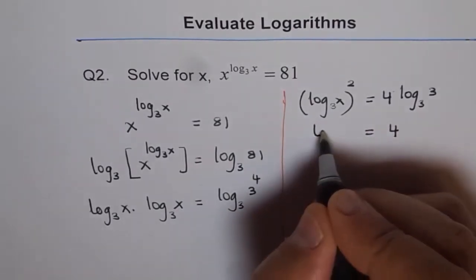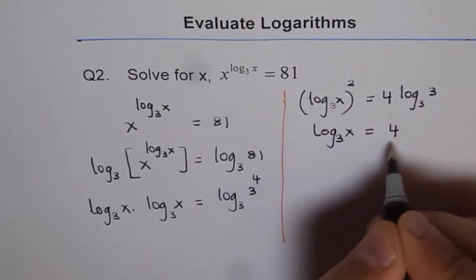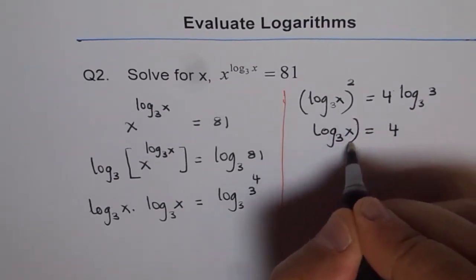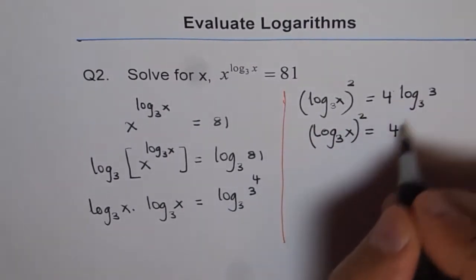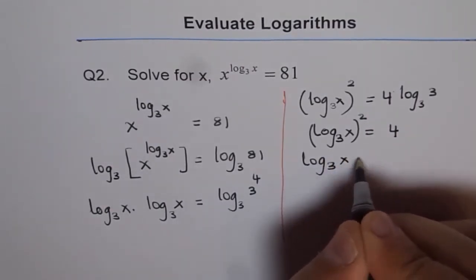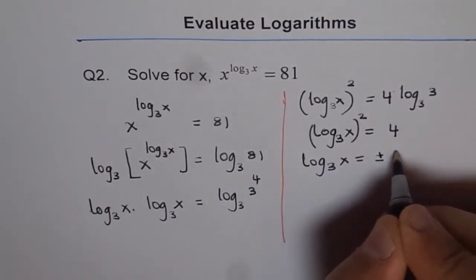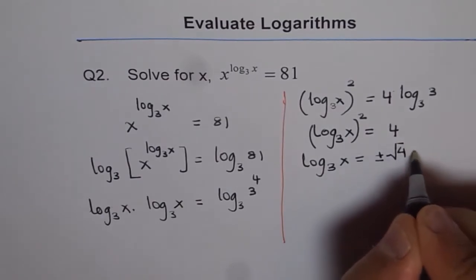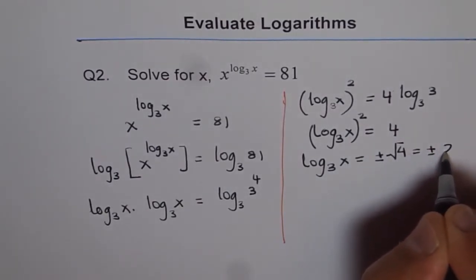So, we will square root this. Log base 3 of x is equals to, or let me just do it in the next step. So, this is equals to 4. And therefore, log base 3 of x is equals to plus minus square root of 4. That is plus minus 2.